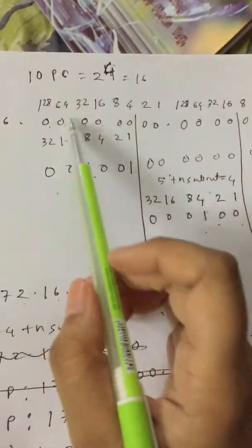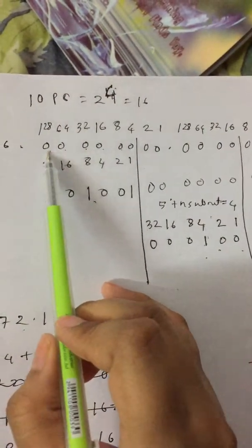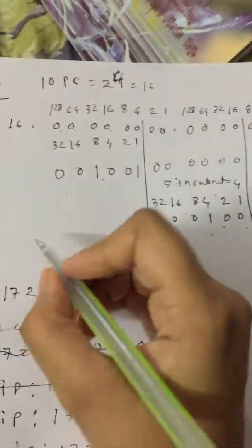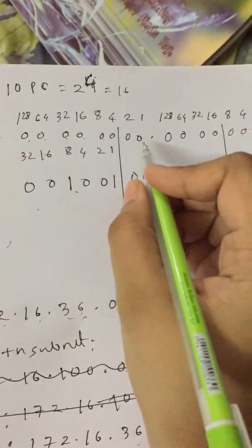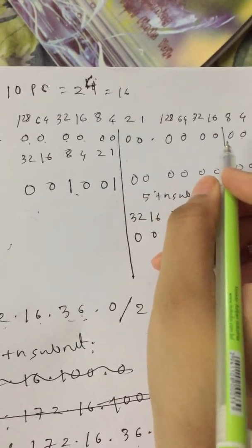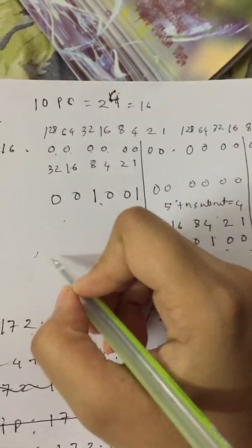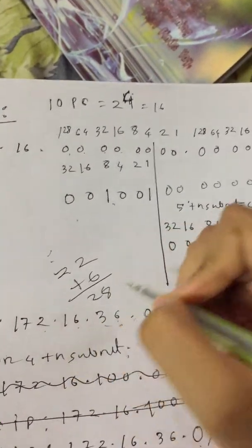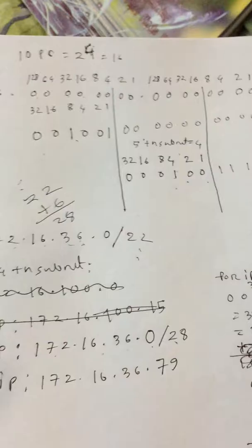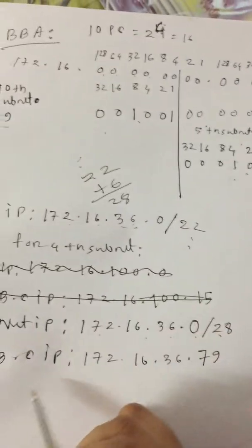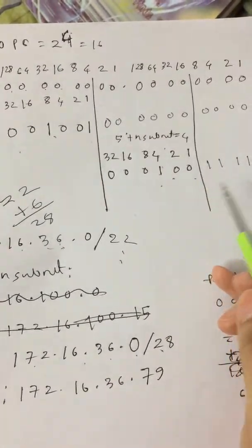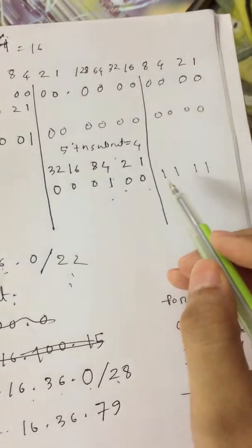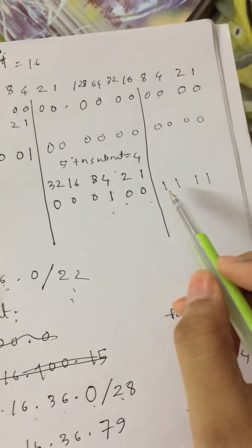Now for fifth subnet, we numbered here like 1, 2, 4, 8, 16, 32. As it is four, we will take only four here. So the IP address becomes now 172.16.36.0 and it's /28, because now we will count like 22 plus we will add 1, 2, 3, 4, 5, 6.